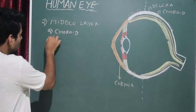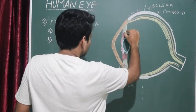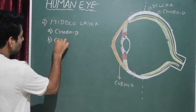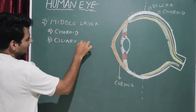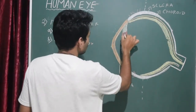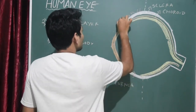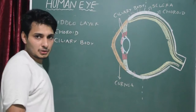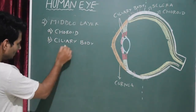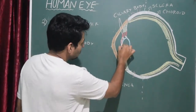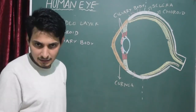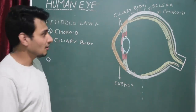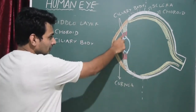The second part of the middle layer is the ciliary body — you can see it here in greenish and red-colored structures. The ciliary body has two parts: ciliary muscles and ciliary process. The third important part is the iris — the colored part of the eye. Your eye color — brown, black, green, blue — is given by the iris. The iris is pinkish in the diagram and has a small hole at its center.